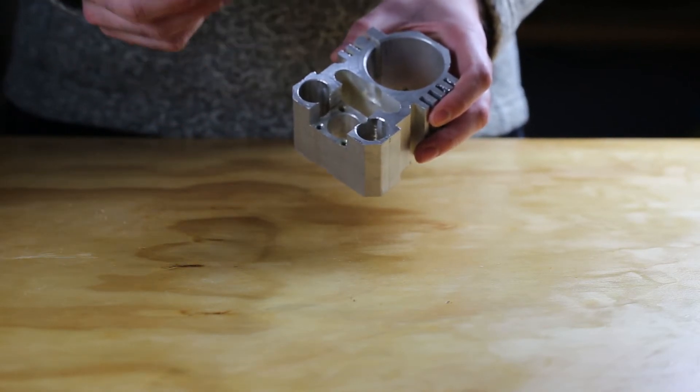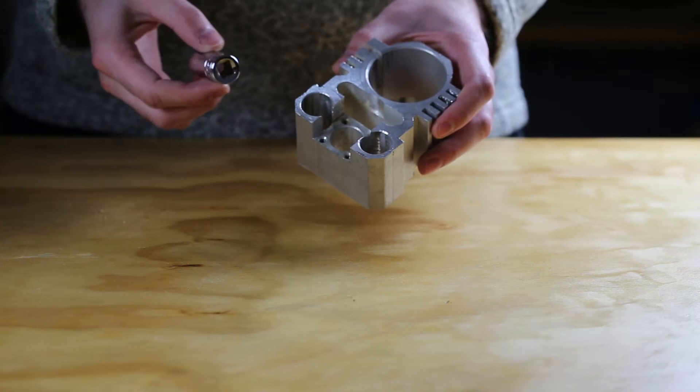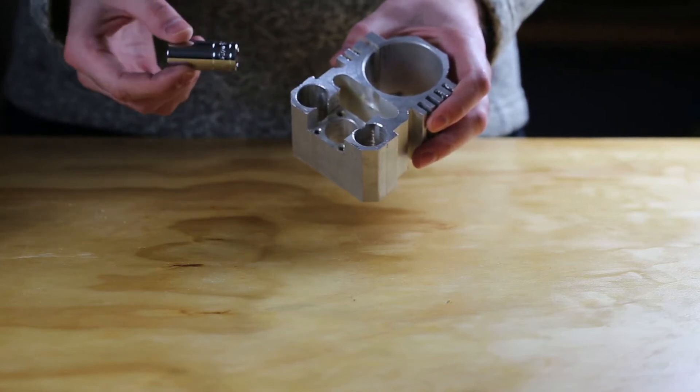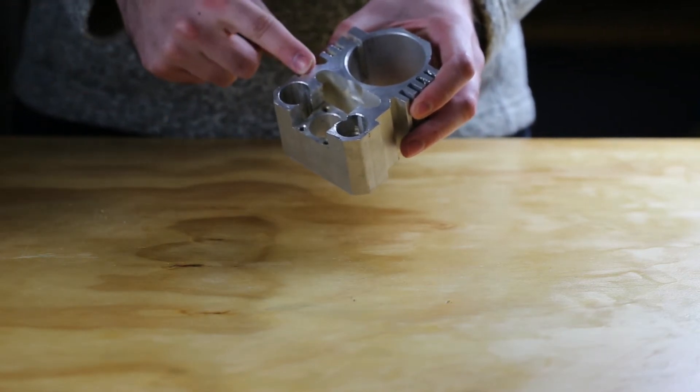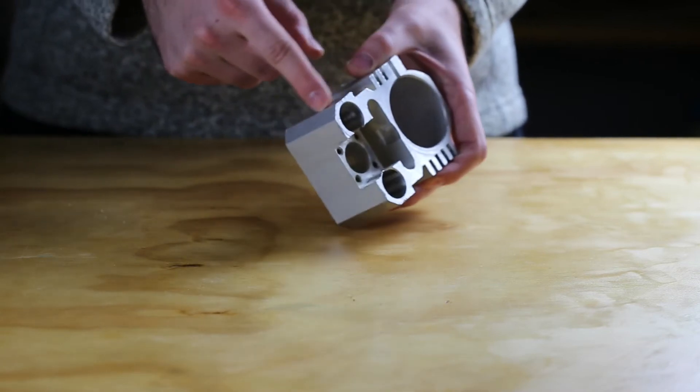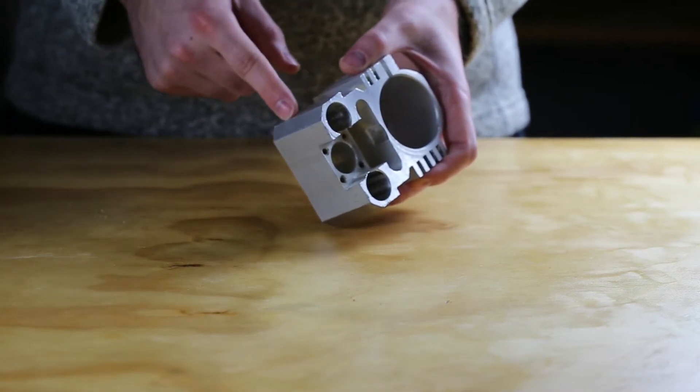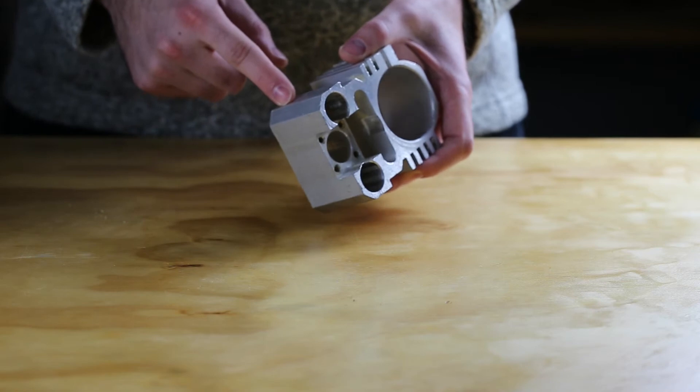But even then, I'm just shy of 200 pounds and I was almost hanging off the arbor press trying to get these out. So if you don't have access to a press, you might be better off either cutting the aluminum or just ordering a new set of bearings online, so make sure you plan ahead for this step.